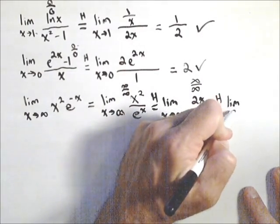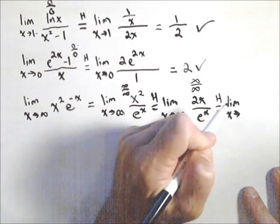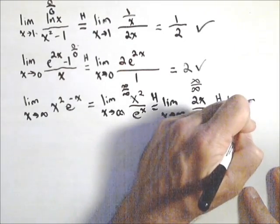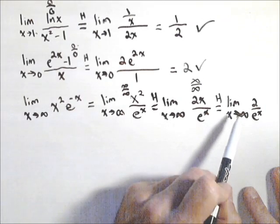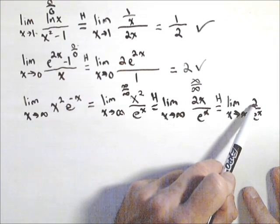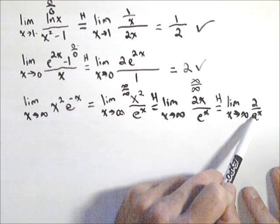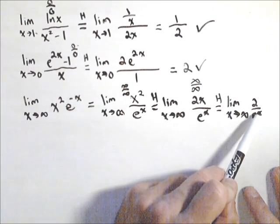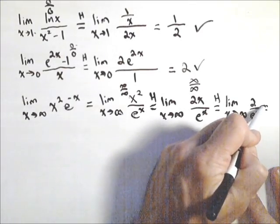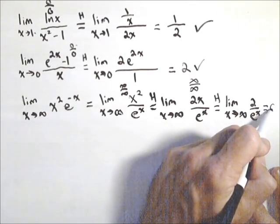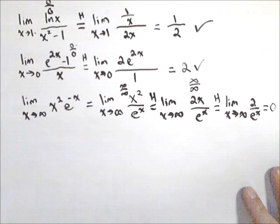So we have the limit as x goes to infinity of two over e to the x. So now we have something that's, the top's going to stay two, and the denominator's going to go to infinity really quick with that e to the x in there. So that's two over something that's going to get really large. Now it's going to drag it down to zero.